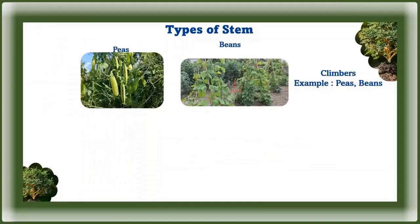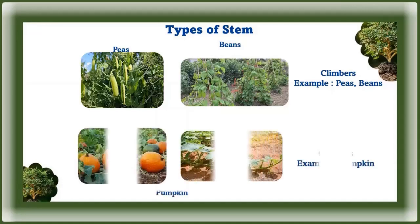Some plants, like the banana, have a thick soft green stem. The stems of some plants, like the money plant and ivy plant, are weak and cannot hold the plant upright. Such plants need support to climb up — they are known as climbers. Examples include bean, cucumber, and money plant.